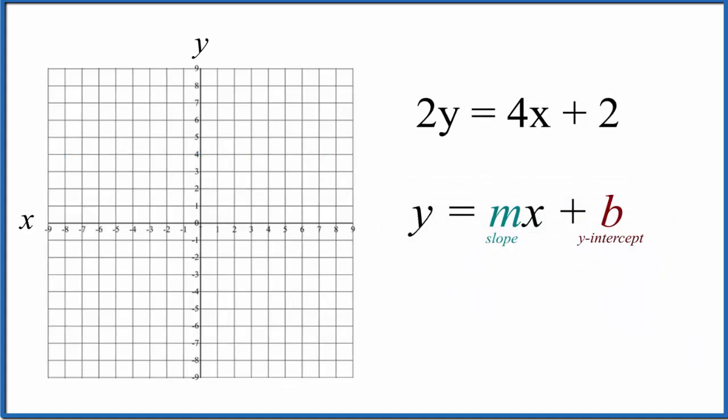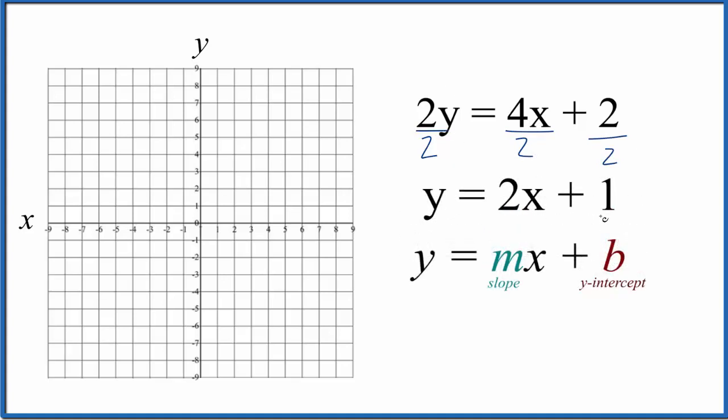Another way that we can graph linear equations is we can use the slope-intercept formula, y equals mx plus b. And this works really well. It'll give us the same answer, just another way to do it. The thing is, we have to have it in this format, y equals mx plus b. So let's take this equation here and divide everything by 2. Since that will give us y by itself, we end up with y equals 2x plus 1.